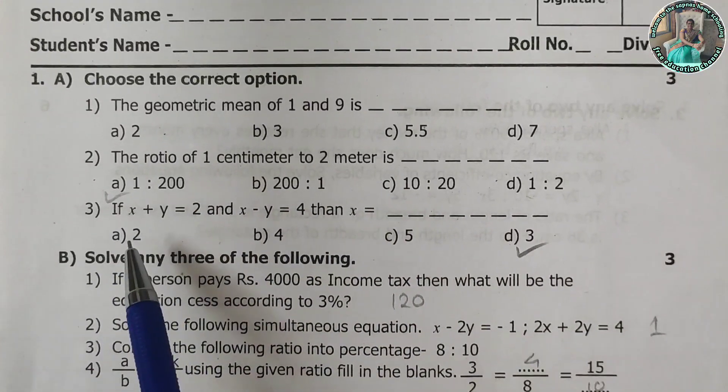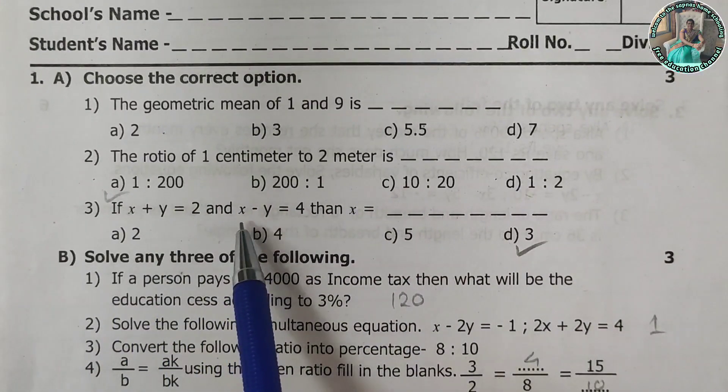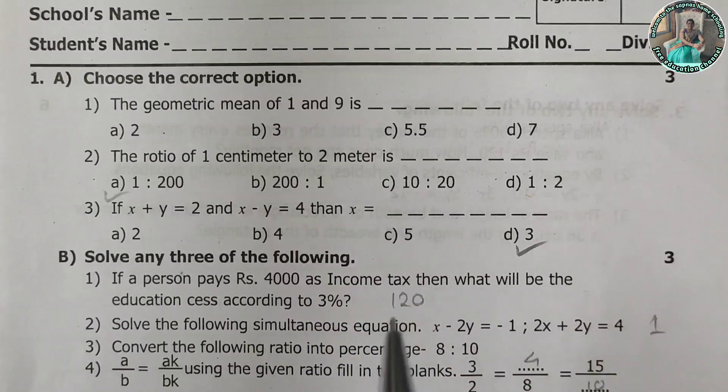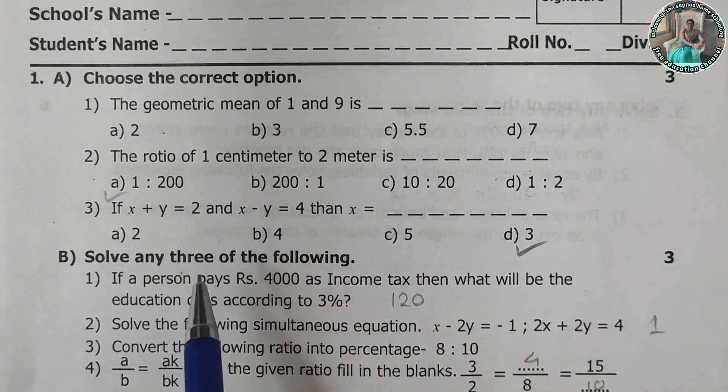If x plus y is 2 and x minus y is equal to 4, then find the value of x. So you have to solve the equation. The answer is 3.